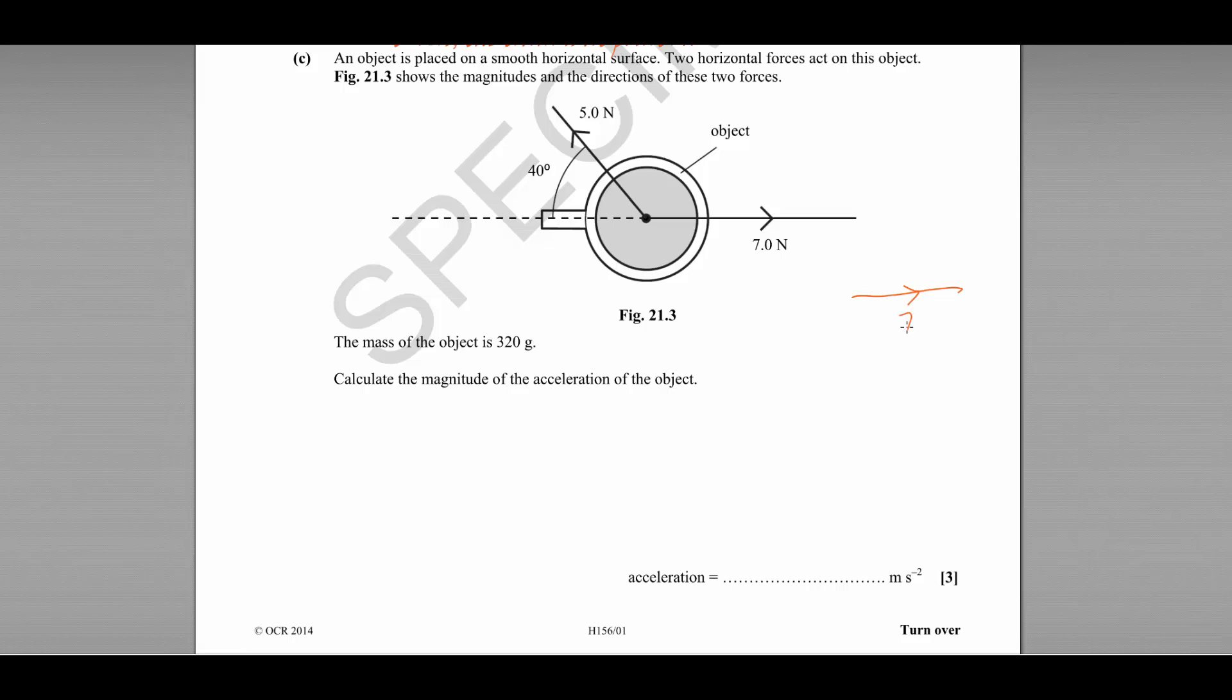We know that we have a horizontal force to the right of 7 newtons, and we know that at an angle of 40 degrees we have another force of 5 newtons. So therefore the resultant force is going to be acting up here, and that's our resultant force F.